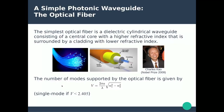Whether a fiber is single mode or multi-mode is governed by the parameter V, which depends on the diameter of the glass core, the wavelength lambda of the mode being propagated, and the refractive index contrast between core and cladding. If V is below 2.405, the fiber sustains single mode. For multi-mode propagation, you need to increase V by either increasing the core size, decreasing the operating wavelength toward the UV, or increasing the refractive index contrast.